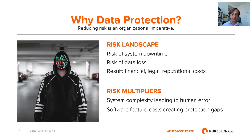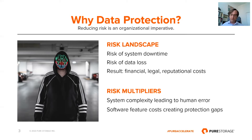There are certain things that become risk multipliers — things that make the risk level go up. One of the major ones is system complexity. One of the largest causes of both system downtime and data loss is human error, and human error comes from complexity. As systems are harder and harder to manage, it naturally leads to more errors. There's also one you may not think of as much: software feature costs can create protection gaps. If your storage charges extra for additional data protection features, you may not be using them because they're not within your budget.